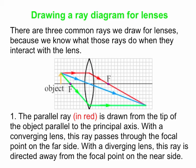One thing to note is that we take shortcuts when drawing ray diagrams — we show the ray changing direction at the exact center of the lens, which is an approximation. In reality, the change in direction happens at each lens surface: the ray bends entering the front surface of the lens and bends again exiting the back surface. We're not showing it correctly inside the lens, but we're doing well outside, and that's generally where it matters.